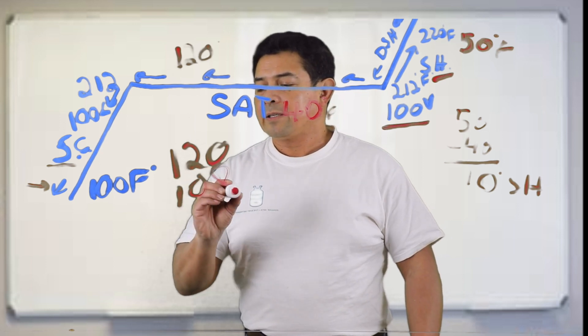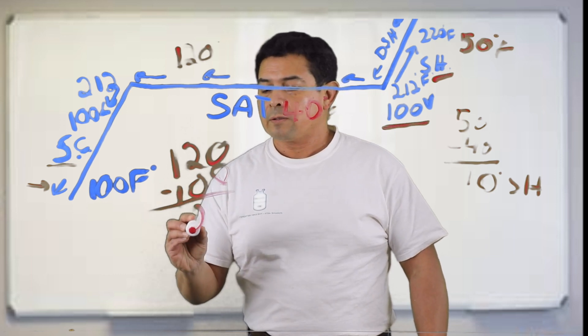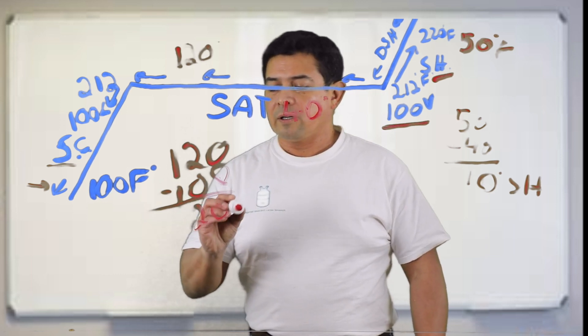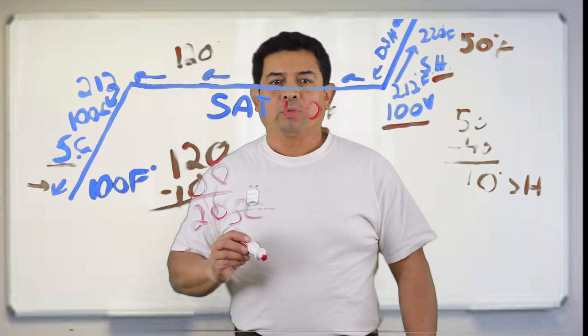And because of that, when we do the math, we subtract, we end up with 20 degrees of subcooling, 20 degrees of subcooling.